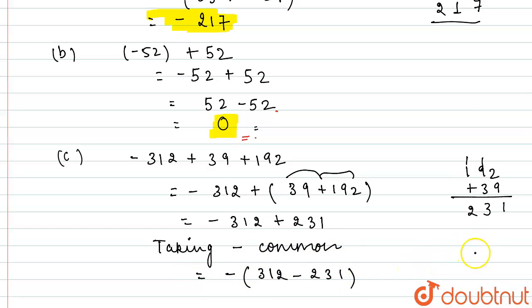Now again you'll solve this, that is 312 minus 231. So 2 minus 1 will be 1. Now 1 minus 3, so we'll take 1 carry, so it will become 11 minus 3, that is 8, and here 2 minus 2 will become 0. So 81. So what I'm getting is minus 81. So this is our answer for C part.